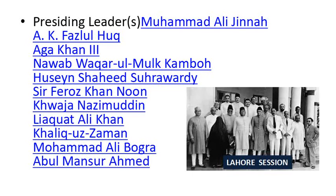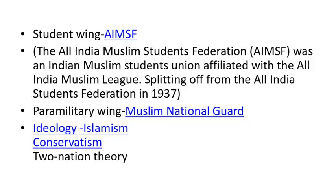Key leaders included Muhammad Ali Jinnah, also known as Quaid-e-Azam, Wazir ul-Haq, Agha Khan III, Nawab Viqar-ul-Mulk, and many others, including Khaliquzzaman Khan and so on. The student wing was the All India Muslim Students Federation, also known as AIMSF — the All India Muslim Students Union — affiliated with the All India Muslim League, splitting off from the All India Students Federation in 1937. The parliamentary wing is the Muslim National Guard. The ideology is Islam, Islamization, conservatism, and the two-nation theory.